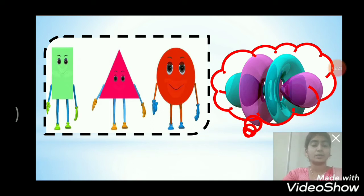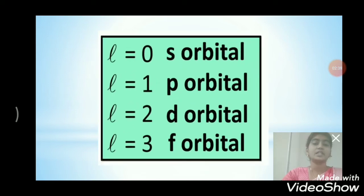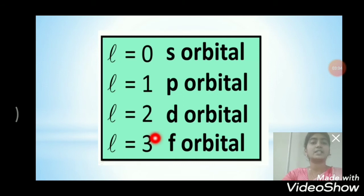Before we move on to our topic, I am going to talk about how orbitals are shaped. The shape of orbitals is determined mainly by L, that is the angular momentum quantum number, also called the azimuthal quantum number. Values of the azimuthal quantum number are assigned by the letters S, P, D, and F. The L value for S orbital is 0, for P orbital is 1, for D orbital is 2, and for F orbital is 3.